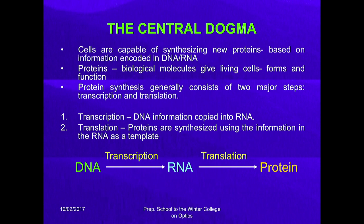Cells are capable of synthesizing new proteins based on the information encoded in DNA and RNA. Proteins are the biological molecules that give living cells their form and function. Protein synthesis generally consists of two major steps: transcription and translation. Transcription is when DNA information is copied into RNA, which then moves to the ribosomes where proteins are synthesized using the information in RNA as a template. RNA copies some information from DNA and takes it to the ribosomes, which produce proteins — the message has been transferred from DNA to protein.